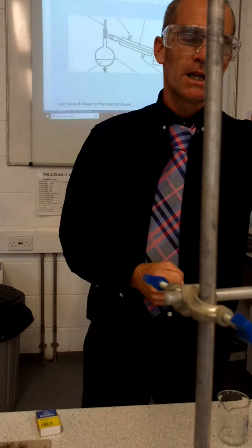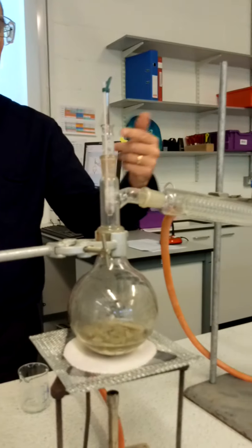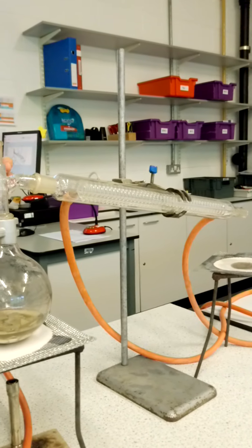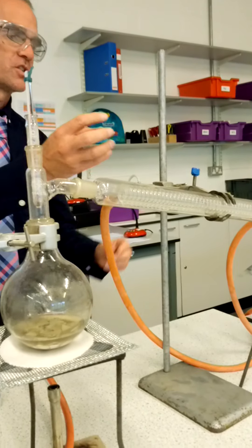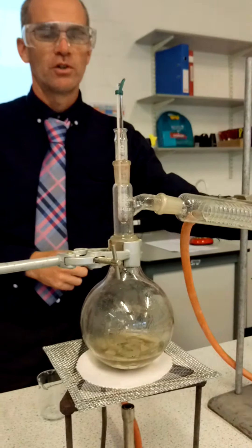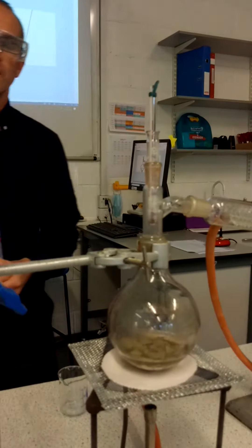And of course Liebig's condenser is a really clever design because that spiral with the cold water helps this to stay lovely and cold. And it makes sure that all of your distillate is collected. It makes sure that everything condenses back and that you get a nice distillate product at the end. Thank you, everybody.